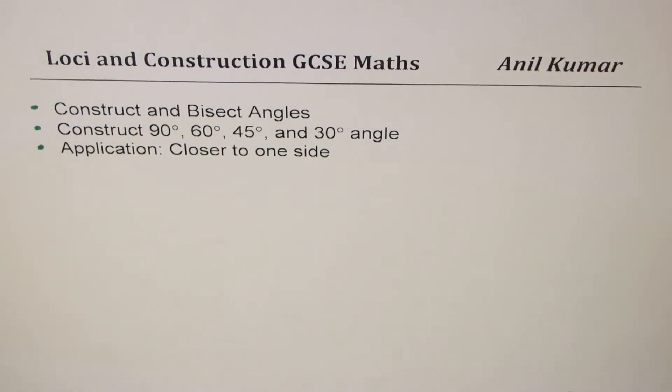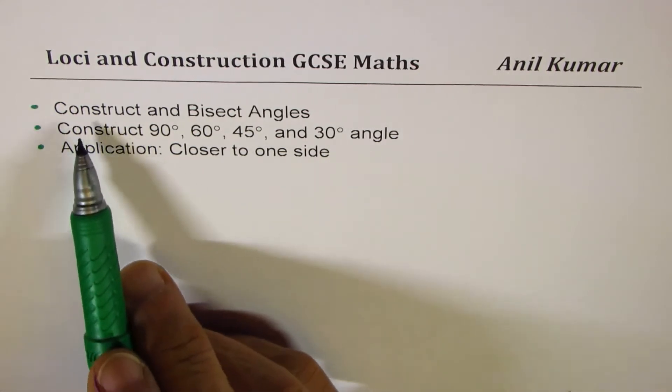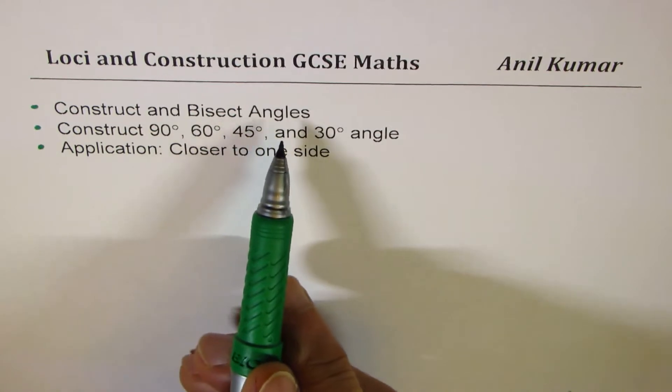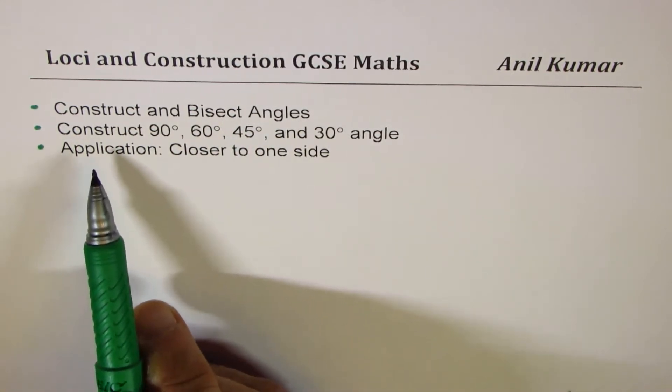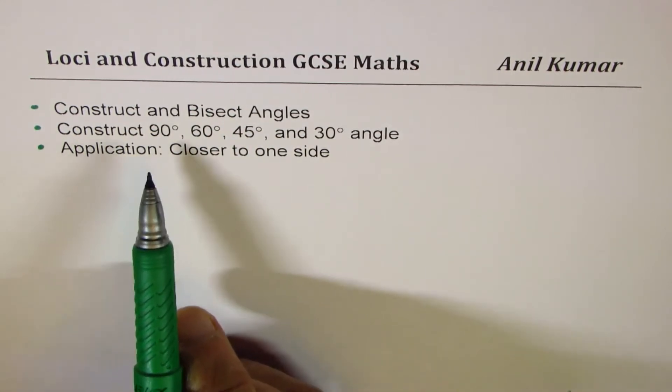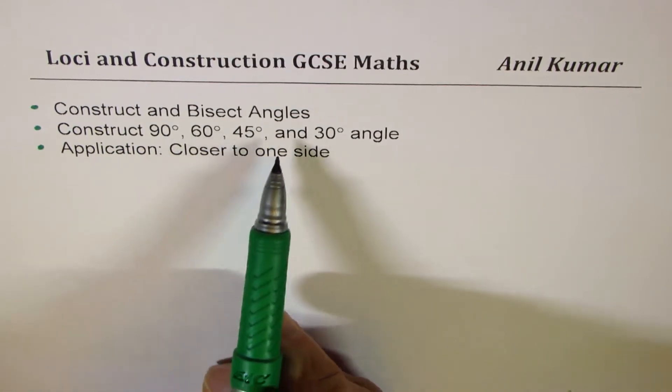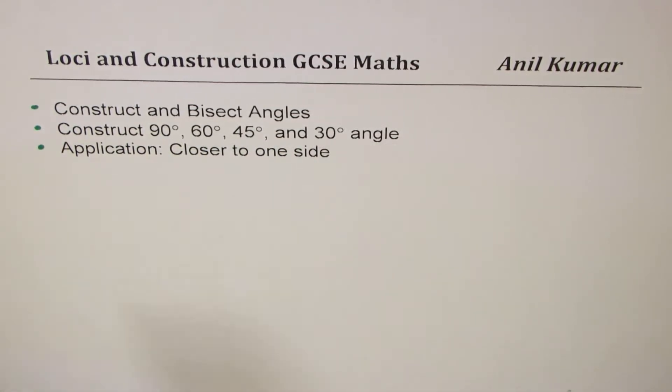Anil Kumar, in this video on loci and construction, let us try to understand how to construct and bisect angles. We'll take a big sample and construct 90 degrees, 60 degrees, 45 degrees, and 30 degrees angles not with the protractor, with compass and a ruler.